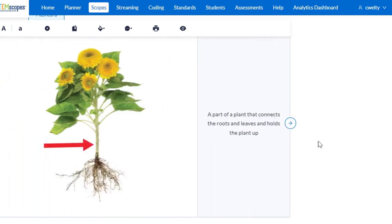Let's go to our next one. Pay attention to where the arrow is pointing. A part of a plant that connects the roots and leaves and holds the plant up. Pause if you need more time. This is the stem of the plant.